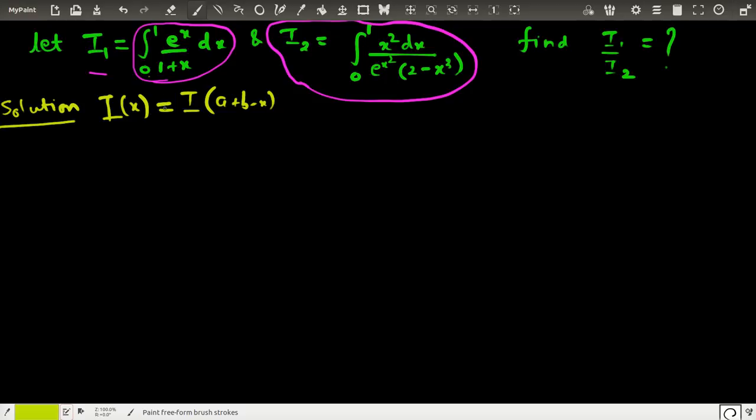If I use this in the first one, I can replace x by 1-x. So I₁ becomes the integration from 0 to 1 of e^(1-x)/(2-x)dx.